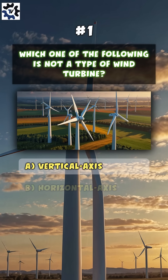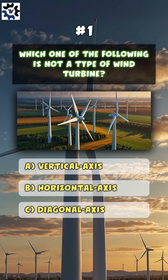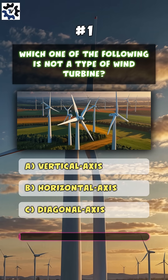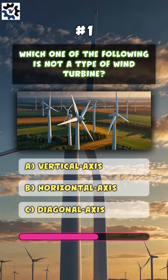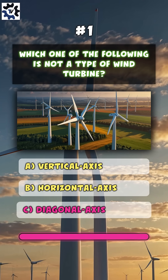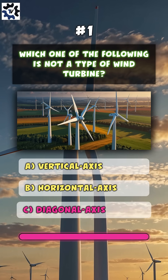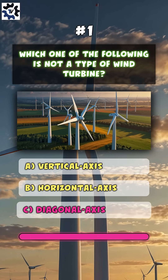Which one of the following is not a type of wind turbine? C. Diagonal axis.